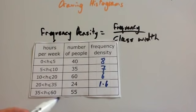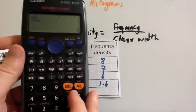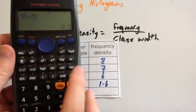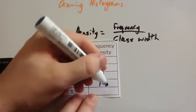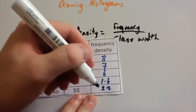And finally, the frequency is 55. The class width is 25. So you're going to do 55 divided by 25. And you get 2.2. So the frequency density for the last category is 2.2.